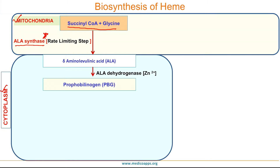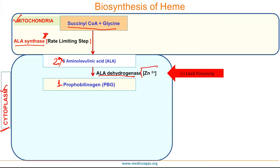From here, the next few reactions occur in the cytoplasm. Two molecules of ALA condense to form one molecule of porphobilinogen, or PBG, in the presence of ALA dehydrogenase. Importantly, ALA dehydrogenase contains zinc and is inhibited by lead, so this step is specifically inhibited in lead poisoning.